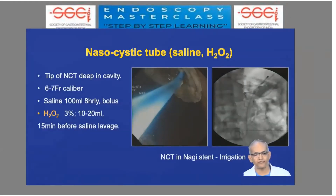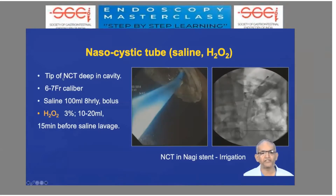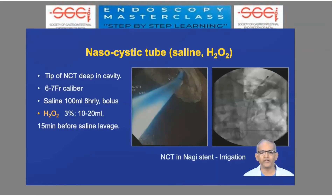The second step is when there is no declogging required, or once finished, and you find a lot of debris and infection in the cavity — then place a nasocystic tube at the same sitting of the first session. It is generally a 6 to 7 French caliber tube, and the tip should be placed deep inside the cavity to flush out as much as possible. It should not be very close to the inner end of the stent.